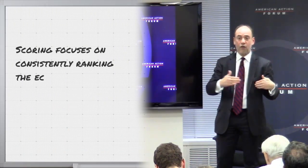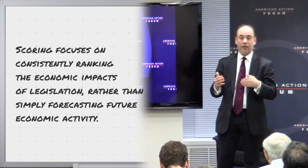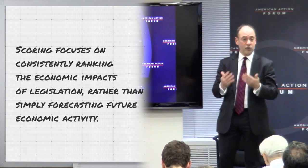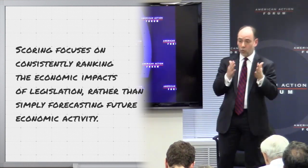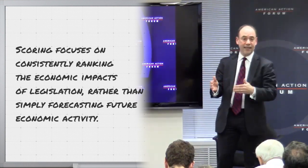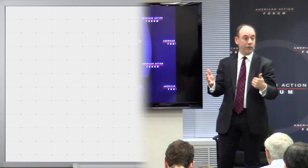The goal isn't to forecast — the goal is to rank proposals correctly. Those which have bigger revenues should systematically show more revenue than those with smaller revenues, and you never want to get them out of order. If you do, you're giving Congress really bad advice about which pieces of legislation they want to choose in order to hit their revenue targets and spending targets. Ranking things consistently is at least as important, maybe even more important, than forecasting accurately.